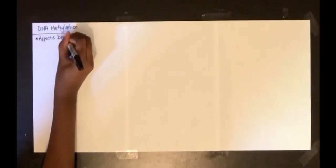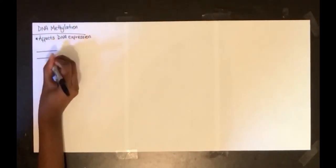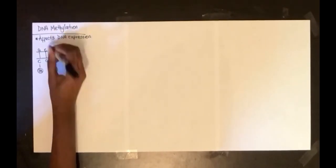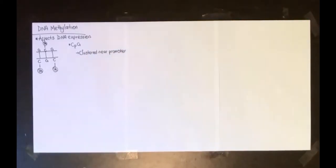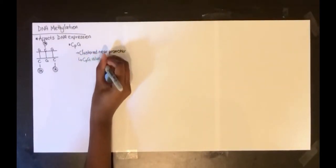The first thing to know is that methylation affects gene expression. It does this by adding methyl groups to the cytosines at CpG islands. CpG islands are a cluster of CpGs that are close to the promoter of a gene.